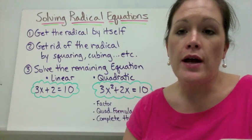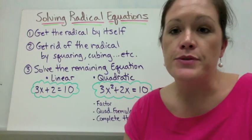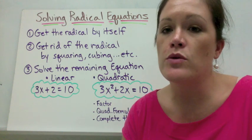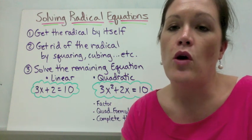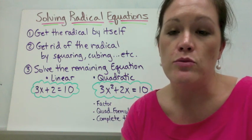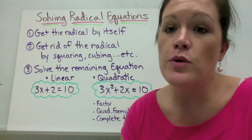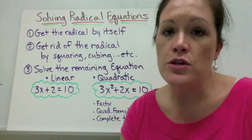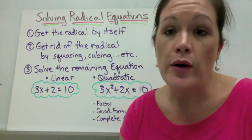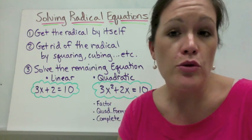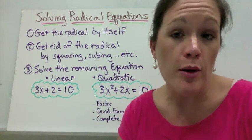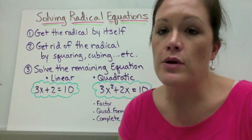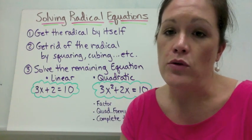Let's talk about solving radical equations. When you're solving radical equations, the first thing you want to do is get the radical all by itself — move everything away from it. And then you want to get rid of the radical, so you're going to do things like square both sides or cube both sides to eliminate it.